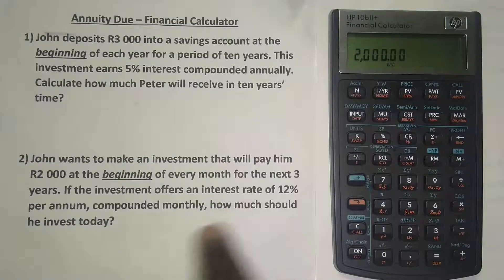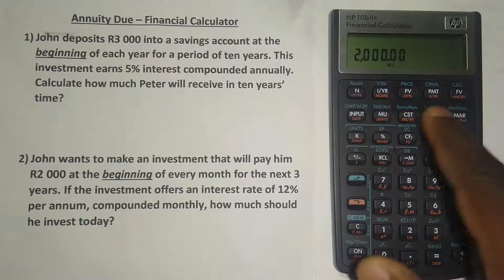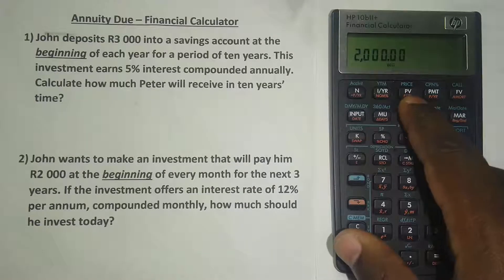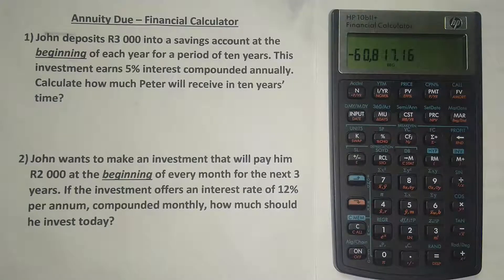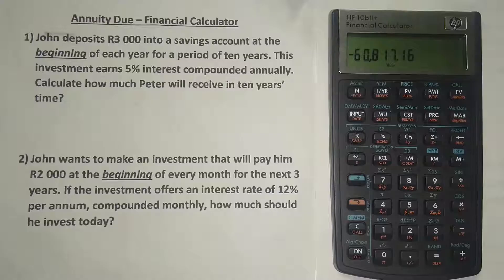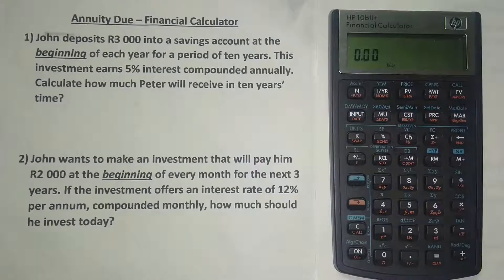How much should he invest today? What we want here is the present value. Press PV and it gives us the answer: he must invest 60,817 rand and 16 cents if he's to receive 2,000 rand at the beginning of every month for the next three years.